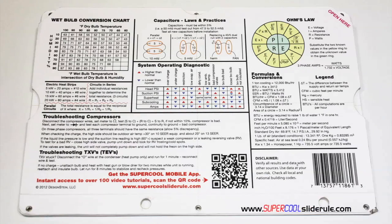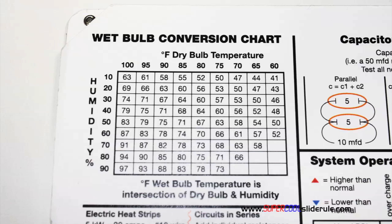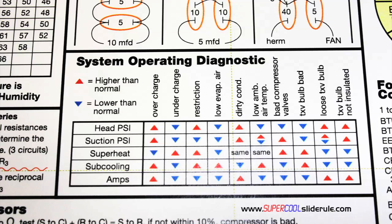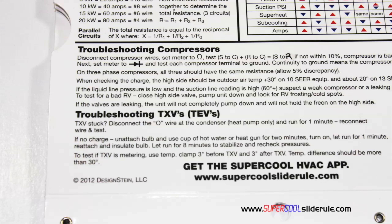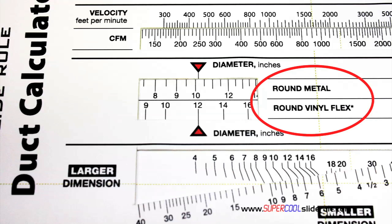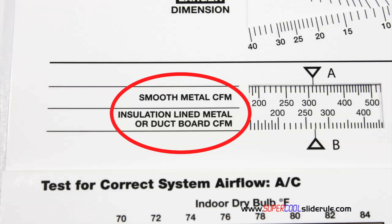The back cover contains required formulas, capacitor rules and practices, a wet bulb conversion chart, how to perform computations on series or parallel circuits, an electric heat strip guide, a complete system troubleshooting diagnostic chart, and how to troubleshoot compressors and TXV. Inside is packed with even more information. It performs sizing of both metal and flexible duct. It has the only direct reading conversion from smooth metal to insulation-lined metal we've ever seen.